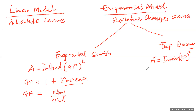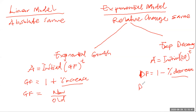In a situation where you do not have the percentage increase but you have consecutive numbers, you can find the growth factor using new over old. For exponential decay, the amount is equal to the initial times the decay factor to the T. And these are the formulas needed in dealing with these.